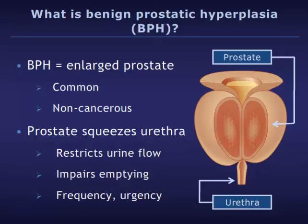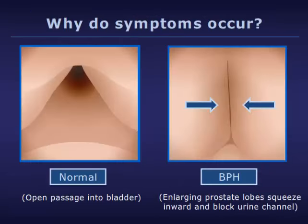Obstruction of urine flow, impaired bladder emptying, and frequent urgent urination can result. These illustrations show the prostate as your surgeon sees it through a telescope called a cystoscope. You can see that as the prostate enlarges, it grows inwards, blocking off the flow of urine through the urethra.